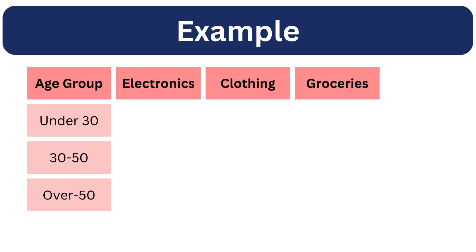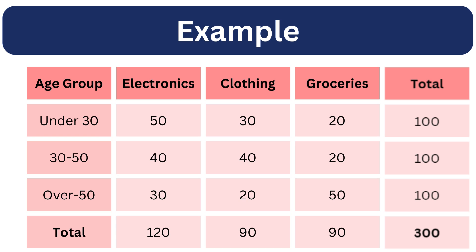You have also recorded their preferences for three types of products: electronics, clothing, and groceries. Now, you want to test if there is a relationship between age group and product preference. This is where we create a contingency table, similar to what we discussed in our last session using cross-tabulation.